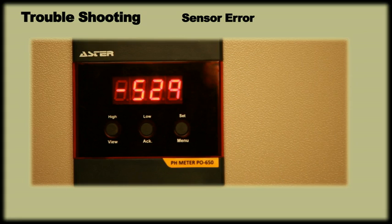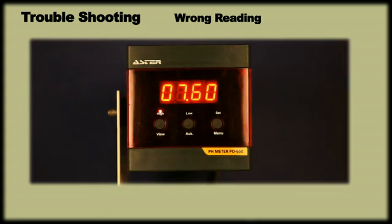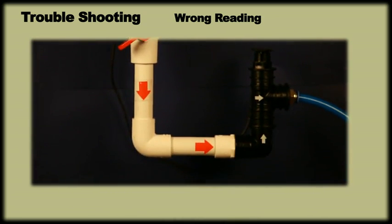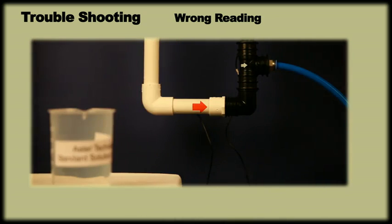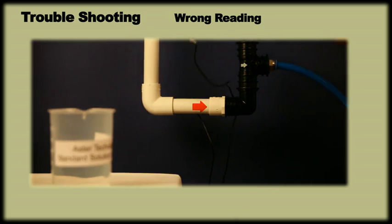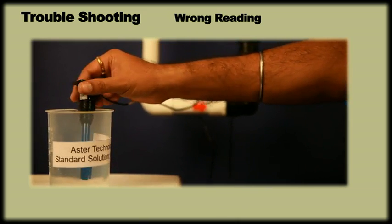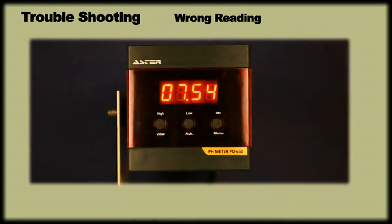If the meter shows wrong reading, it could be because of the following reasons. If the sensor is installed correctly, yet it shows wrong reading, then remove the sensor from line and test the sensor in standard solution of 7 and 4 pH. If it still shows wrong reading, then recalibrate the meter. The wrong reading could also be due to very low conductivity in the water. Contact service center.